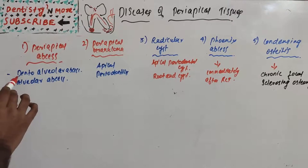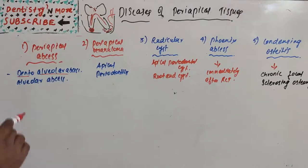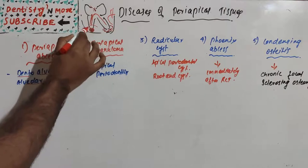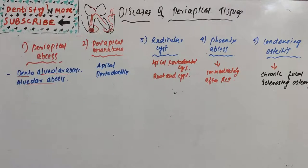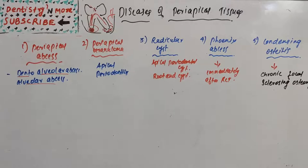The first periapical tissue disease is periapical abscess, also known as dento-alveolar abscess or alveolar abscess. It is an acute or chronic suppurative process of the dental periapical region, characterized by pus formation or pus collection at the apical region.